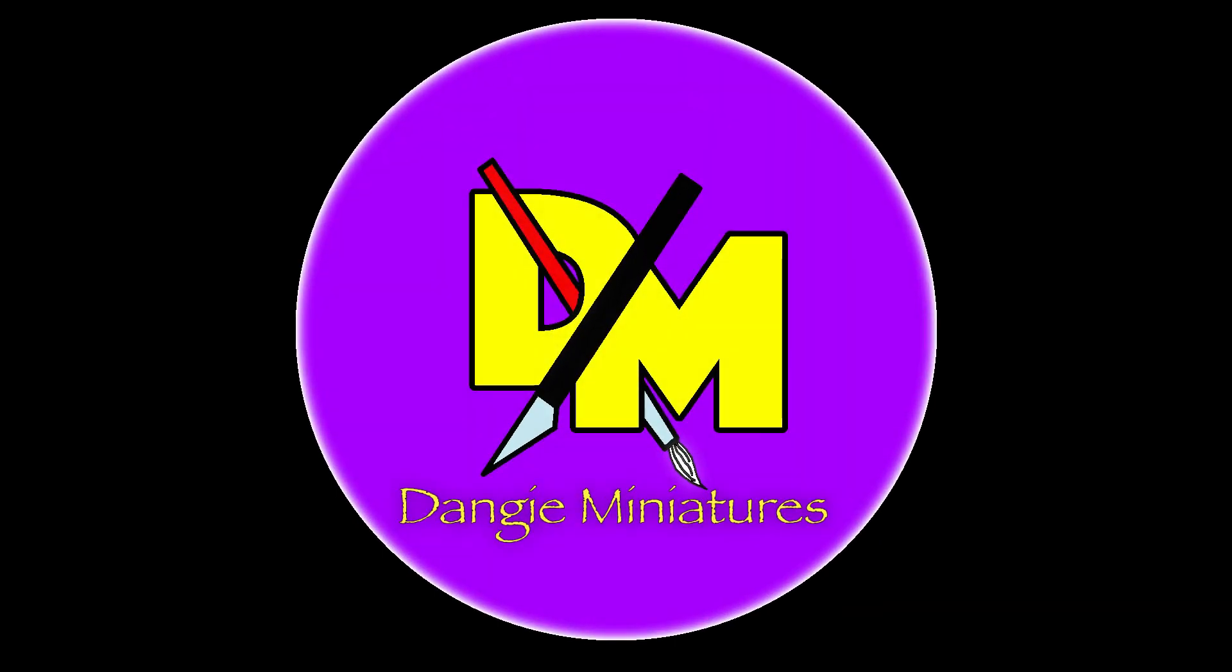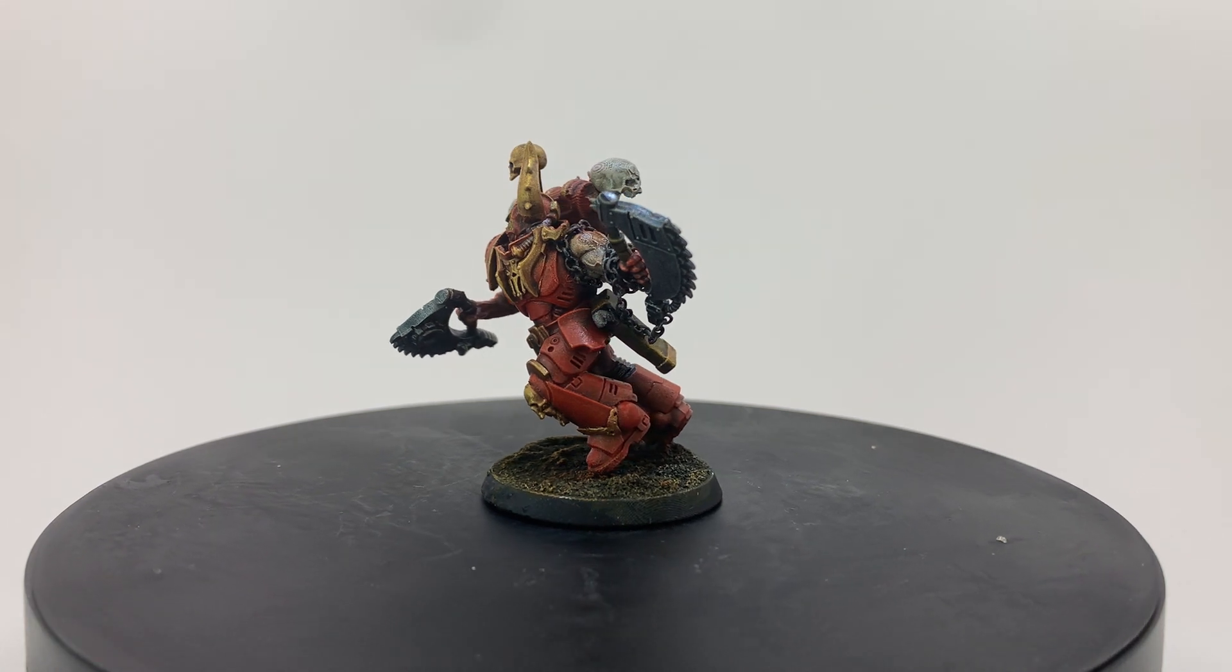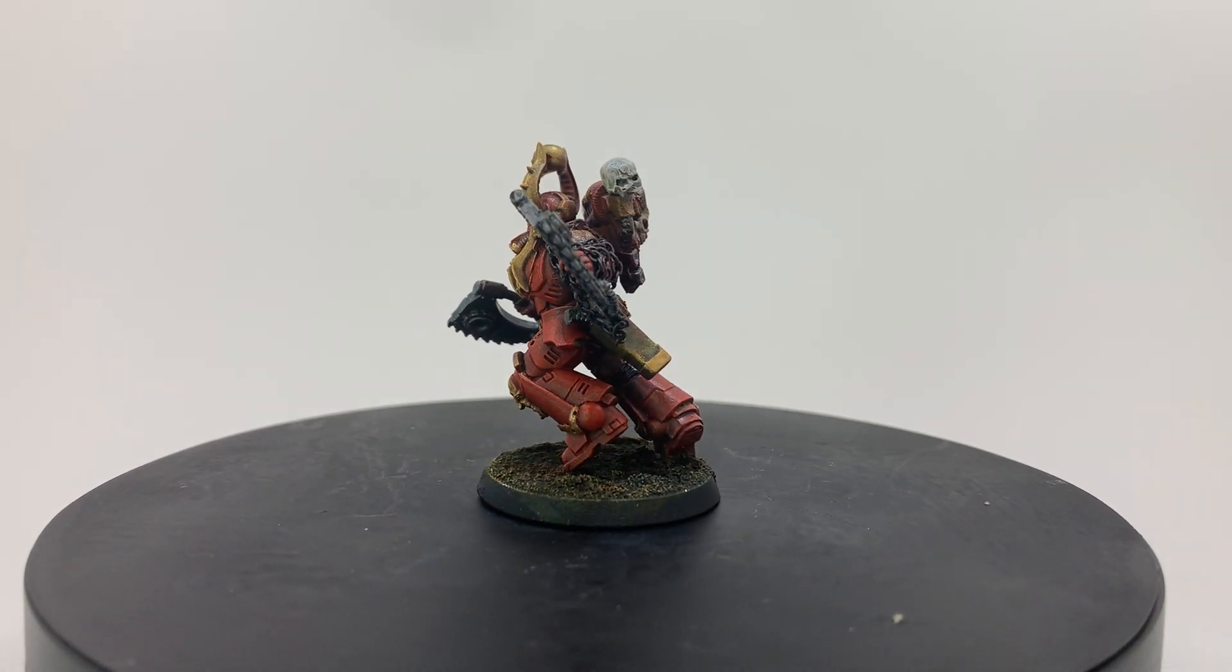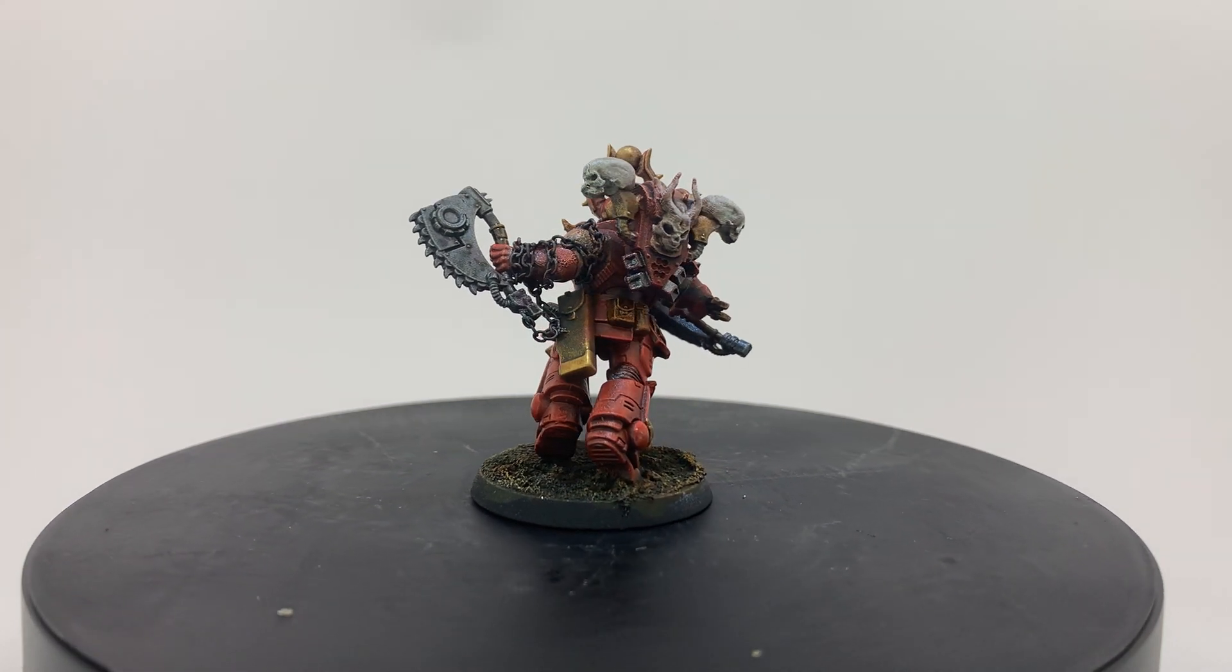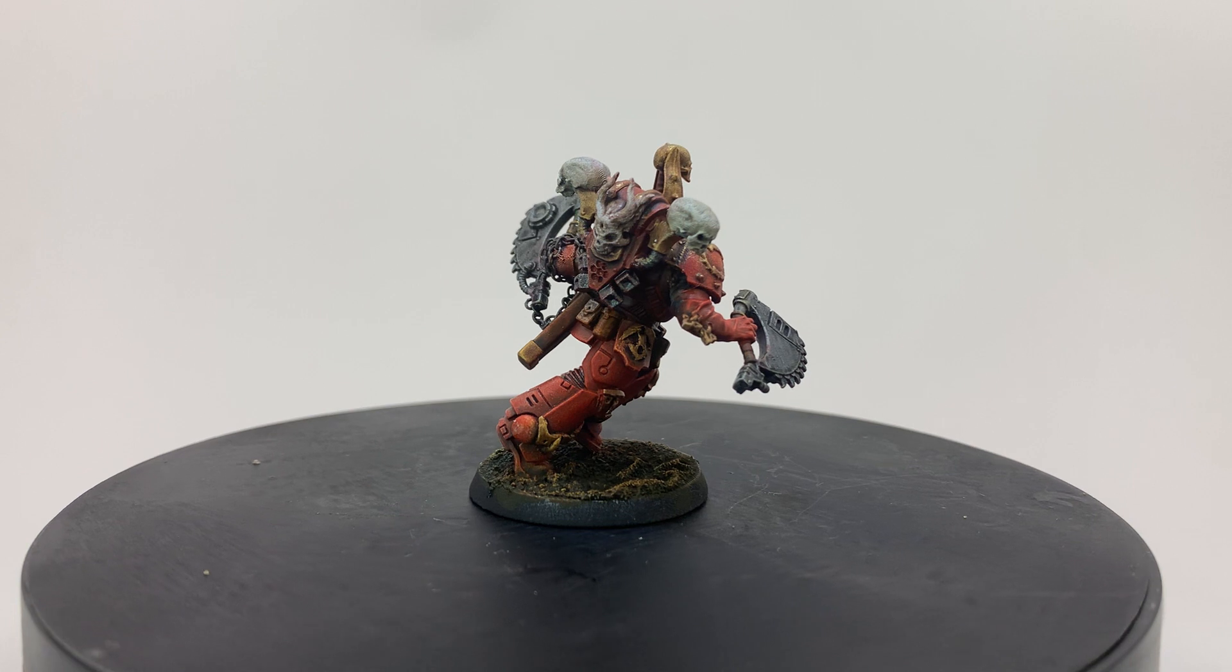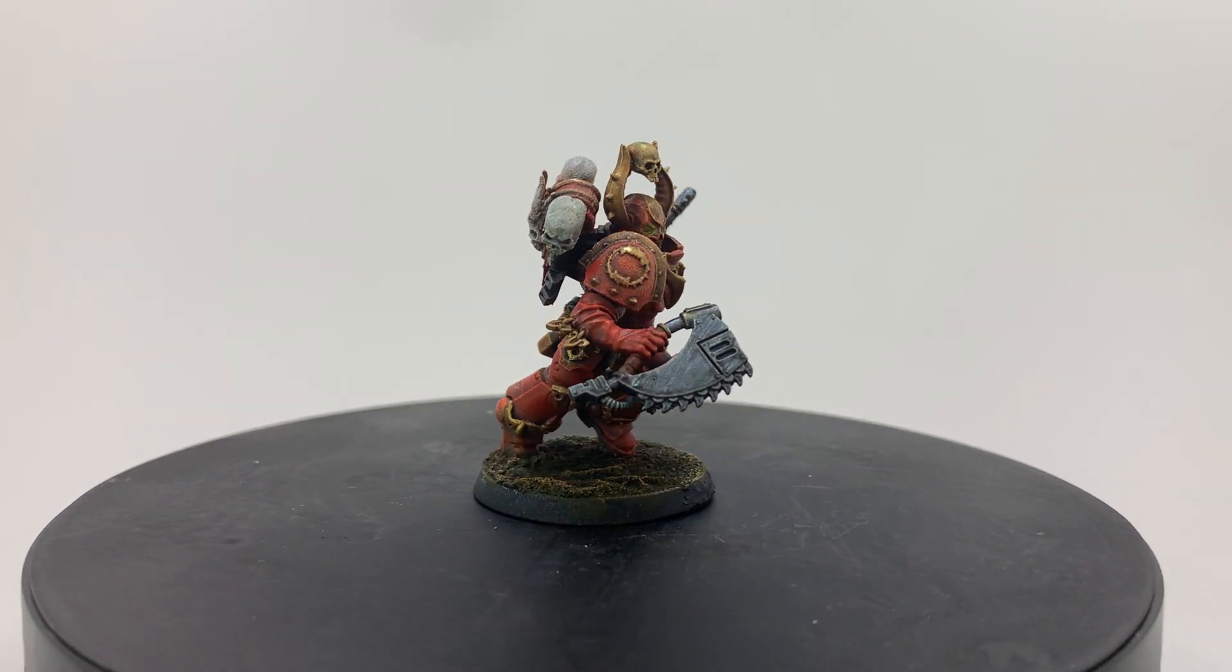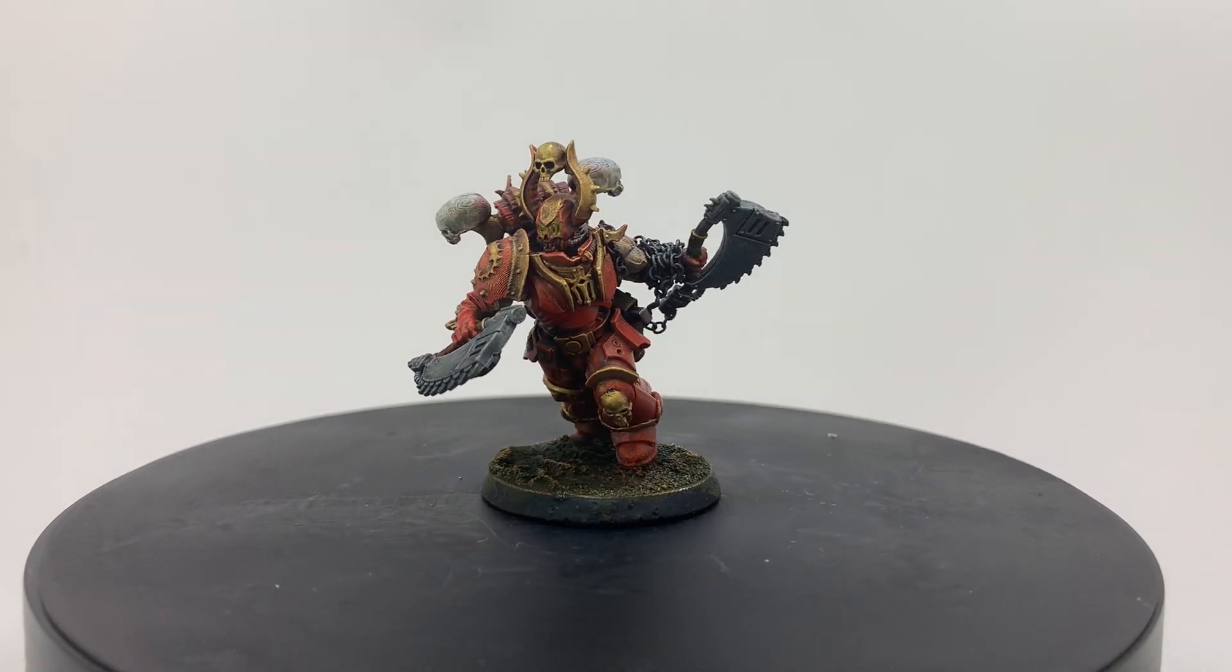Greetings all. For this video I'm going to be corrupting a Primaris Assault Intercessor into a Berserker of Khorne. Not entirely canonical, but very heretical and that's all that really matters with Chaos in the grand scheme of things. This would have been a lot easier with a regular Chaos Space Marine for a base, but I'm all out of those and like to make life harder for myself sometimes, so I'm going to start with an Assault Intercessor.